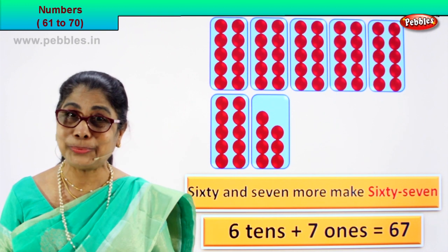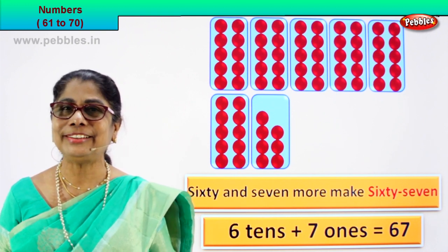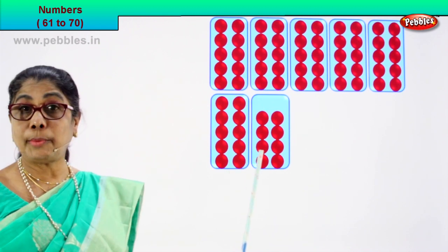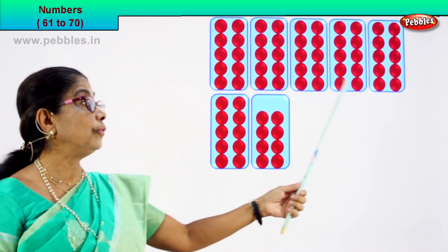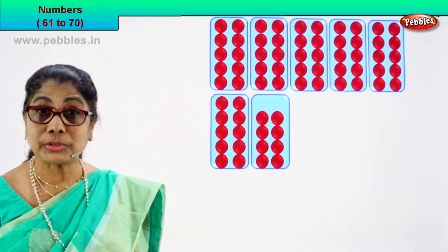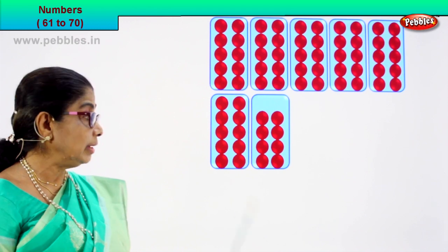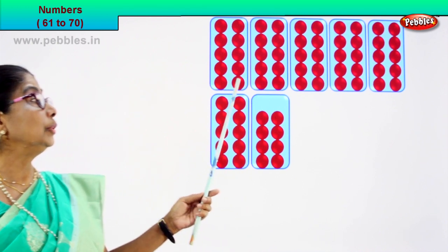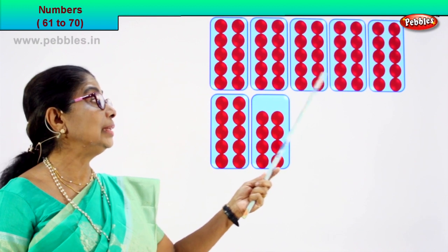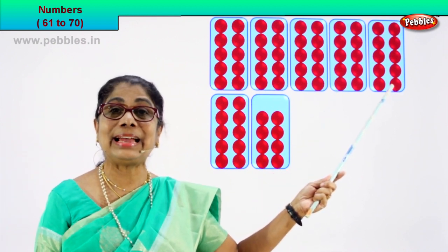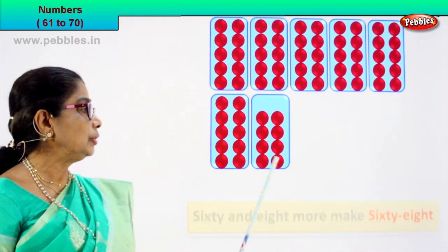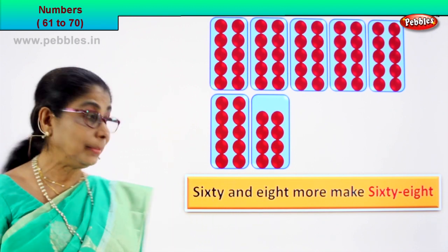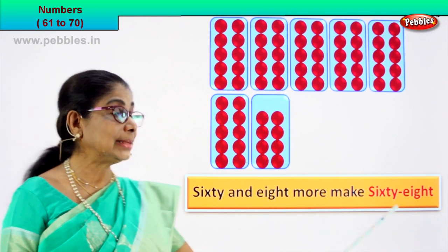We are learning to count. Shall we go to our next number? Let's count all the boxes. One, two, three, four, five, six. How many boxes are there? Six boxes of ten each. Are there really ten? One, two, three, four, five, six, seven, eight, nine, ten. One ten, two tens, three tens, four tens, five tens, six tens. Six tens are sixty. Sixty and one, two, three, four, five, six, seven, eight. Sixty and eight more make sixty-eight.